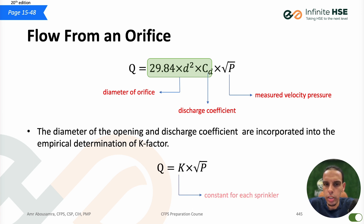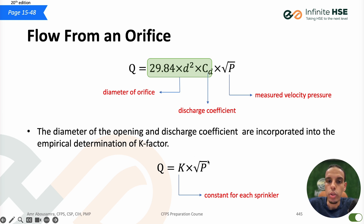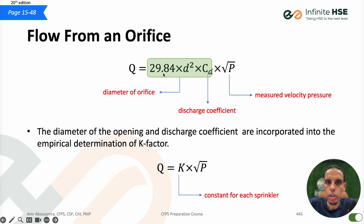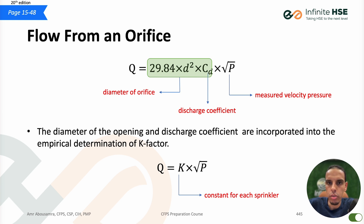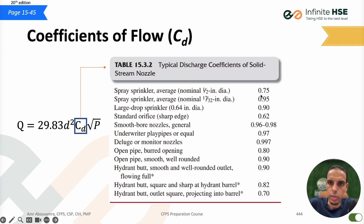This is how the k-factor is calculated. The equation becomes Q = k × √P, which is the basis for all hydraulic calculations. To verify: 29.84 × d² × cd — for a normal spray sprinkler, the diameter is half an inch, so 0.5 × 0.5 = 0.25, multiplied by 29.84, then multiplied by cd = 0.75. Multiply all these constants together and you get 5.6, which is the k-factor of the spray sprinkler.